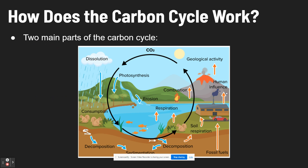How exactly does the carbon cycle work — how does carbon change form as it moves through these four spheres? There are basically two main parts: carbon capture and carbon release. It's an ongoing cycle of carbon being captured, then released, over and over.